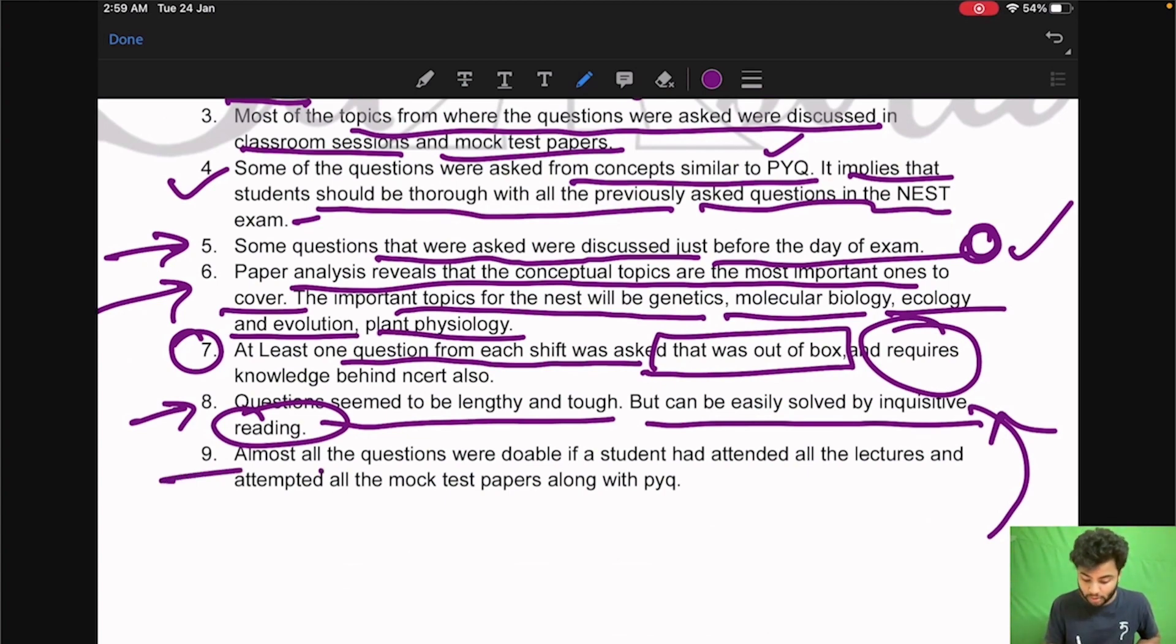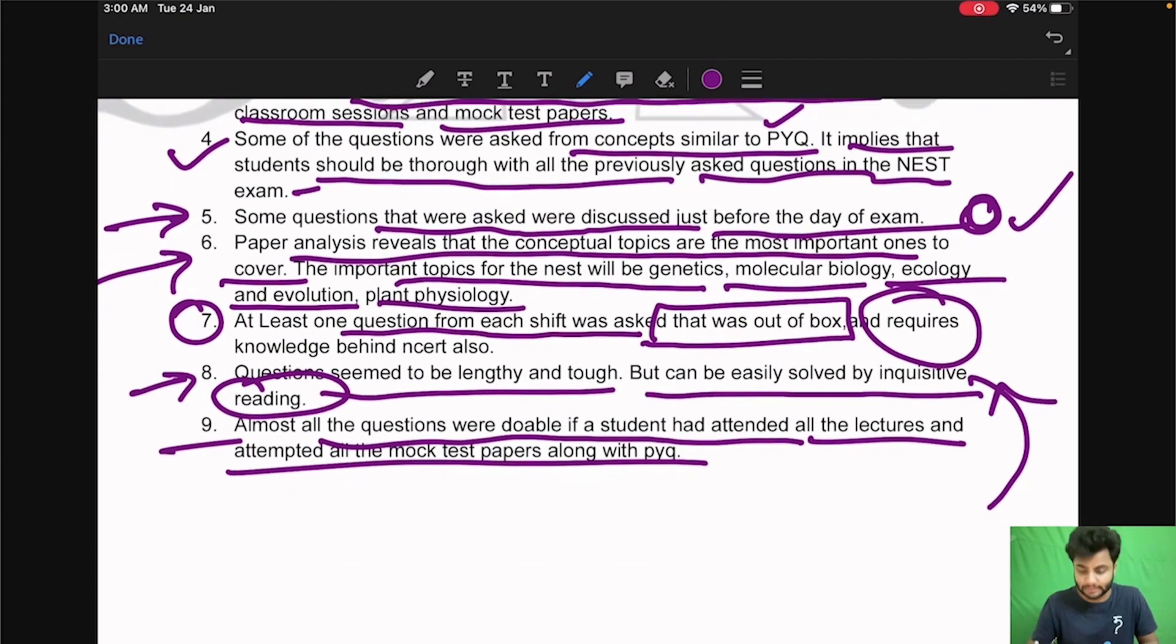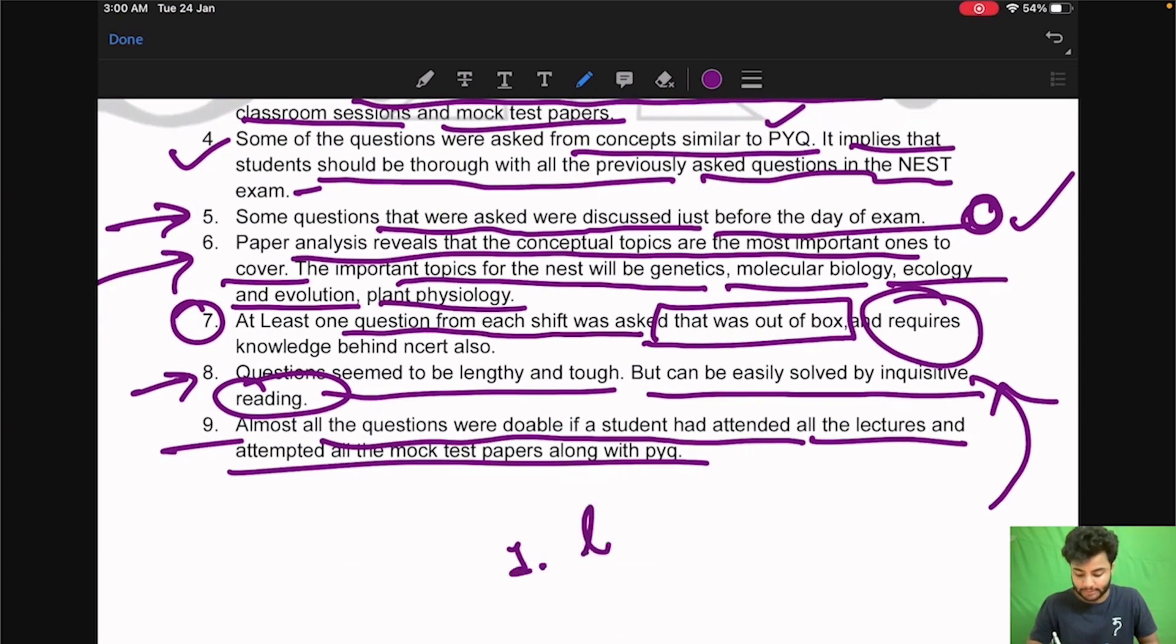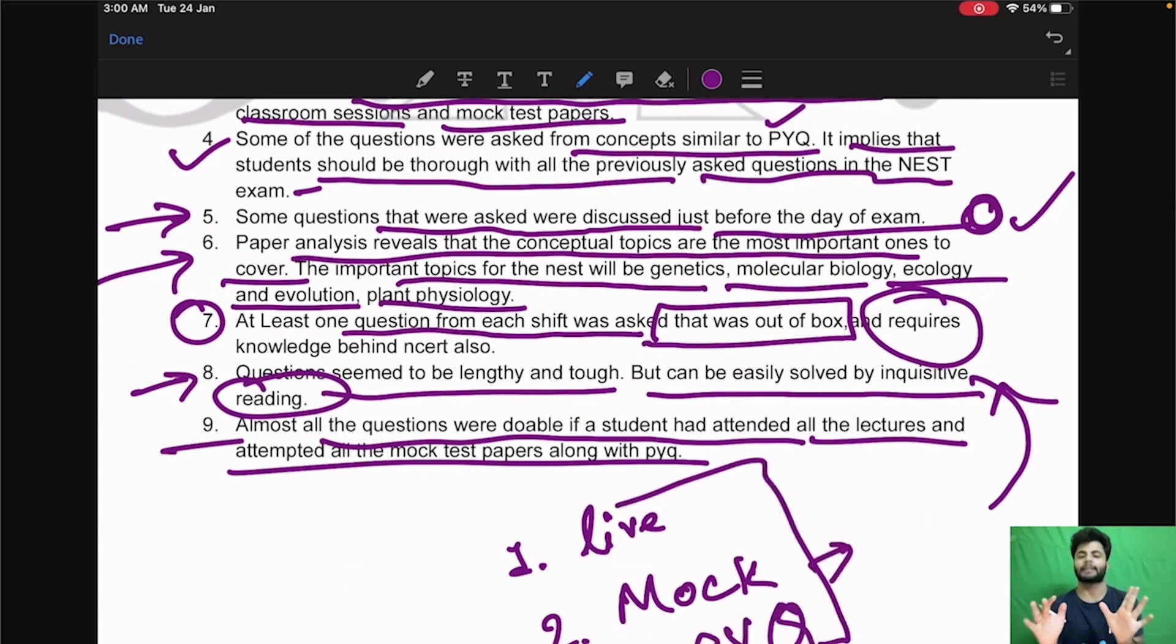Now coming to final almost all questions were doable if a student had attended all the lectures and attempted all the mock tests along with the previous paper. So these are the three things we highly focus on in our Sciastra. First is live classes or the class notes. Second is mock test and finally third is the previous papers. So if these three things that's all you need to do. Nothing else. Nothing outside. No need.